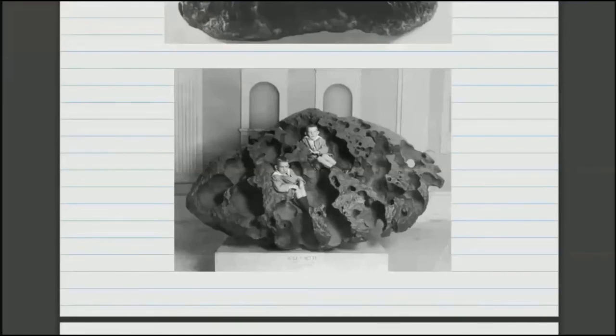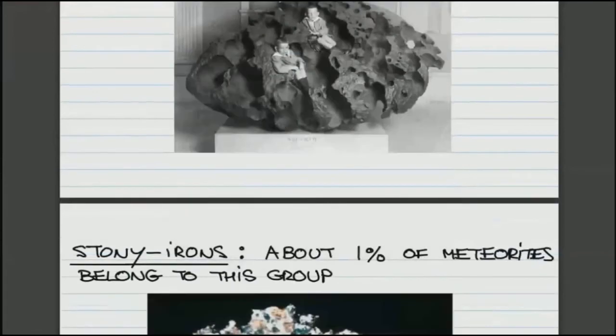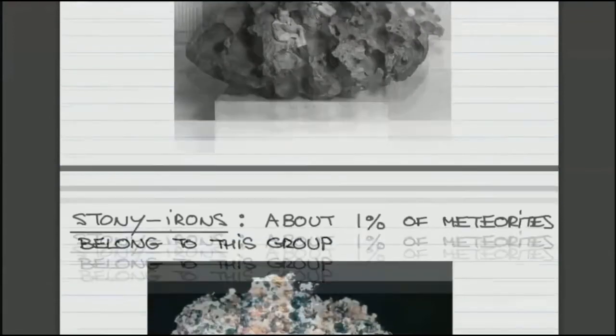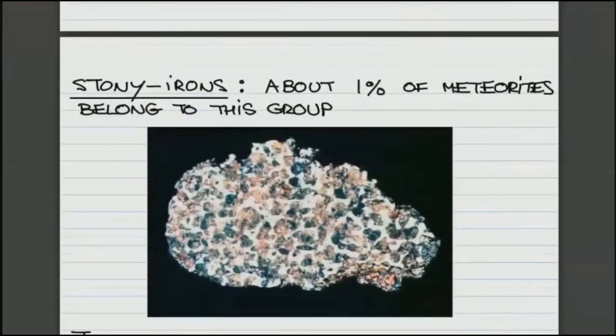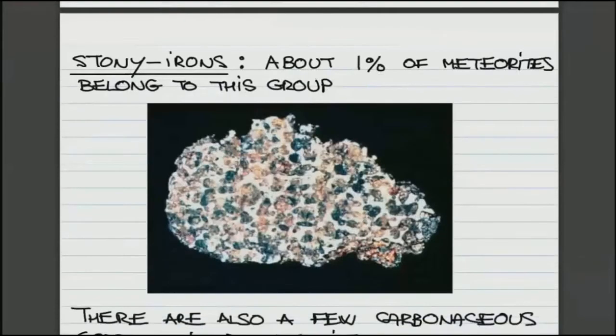The third group, which is the smallest, are stony irons. One percent of all meteorites belong to this group. Here is a photograph of one stony iron where you have metallic particles mixed in together with a silicate rock. Here these shiny enclosures are metals. They are shiny because metals have high reflectivity. This intervening material is just silicate material.